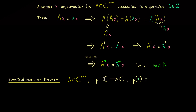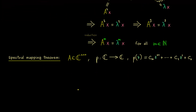Every polynomial can be written with coefficients: c_m times z to the power m, reducing down to the last coefficient c_0. This is a general polynomial of degree m. Corresponding to this polynomial p and the matrix A, we define a new matrix p(A) by simply putting the matrix A into the polynomial — using the same powers and the same coefficients.